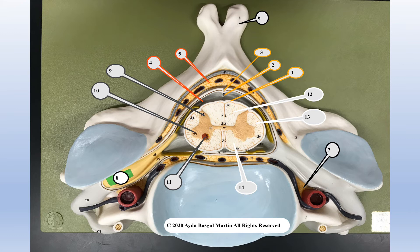To identify anterior versus posterior on the model: if you have the model, you can easily identify because you can see the spinous processes in the back and the body of the vertebra in the front. But if you don't have the model, I'll show you how to do it in the next slide.